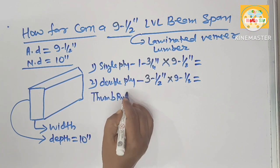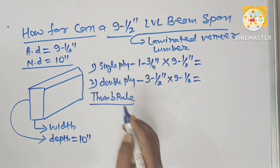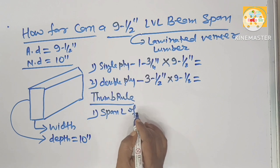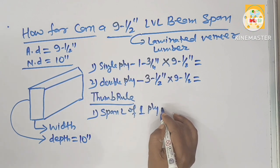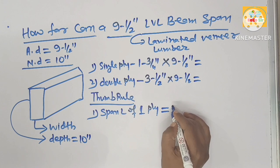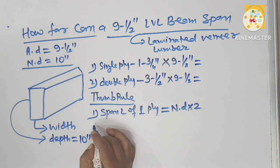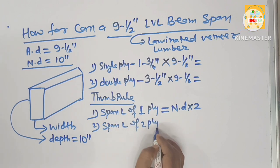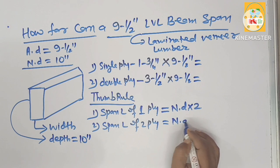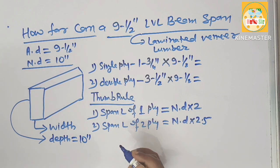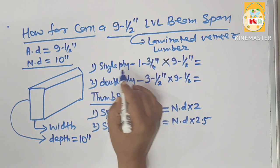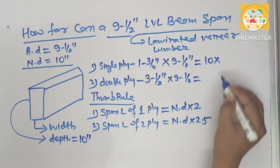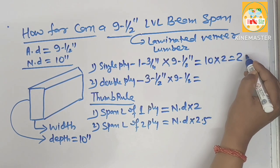What are the thumb rule to decide the span length of this LVL beam? The span length of single ply LVL beam is equal to nominal depth times 2.5. This is thumb rule. That's why the nominal depth of single ply LVL is 10 inches multiplied by 2. This will come to 20 feet.